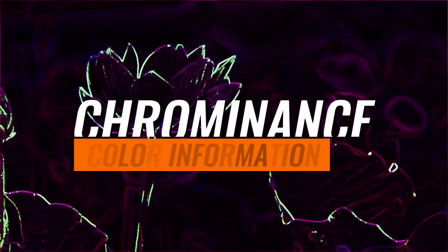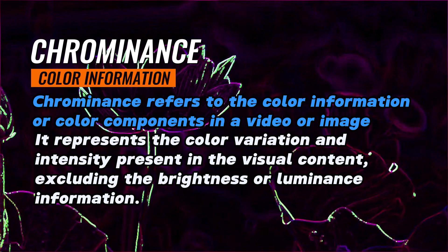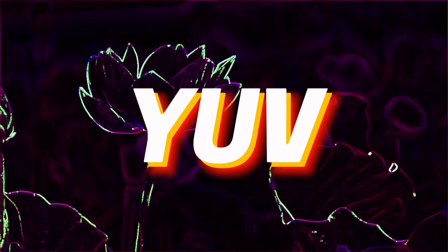Another word we're going to look at in YUV is chrominance. Chrominance refers to the color information or color components in a video or an image. It represents the color variation and intensity that is present in the visual content of the video or image, excluding the brightness or luminance information. So it does not include the brightness or luminance information. Now let's jump in and look at the three components — Y, U, and V — and what they mean.